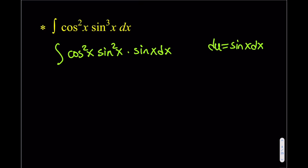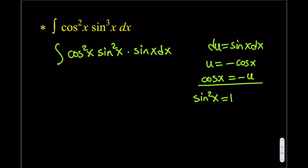So u equals negative cosine x, which means cosine x equals negative u. Cosine squared will just be u². Sine squared can be written as 1 minus cosine squared, and since cosine is negative u, cosine squared is u², so sine squared becomes 1 minus u².